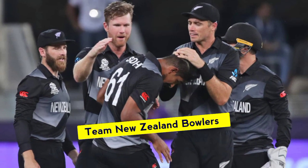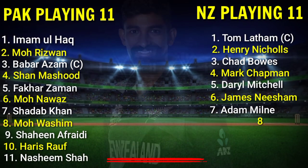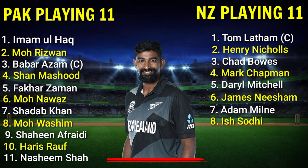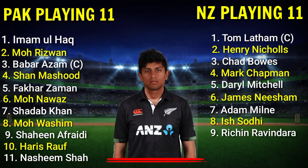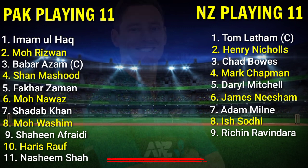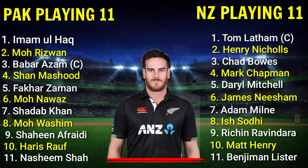Team New Zealand Bowlers: Number 8 Ish Sodhi, right-hand spinner. Number 9 Rachin Ravindra, right-hand all-rounder. Number 10 Matt Henry, right-hand fast bowler. Number 11 Blair Tickner, left-arm fast bowler.